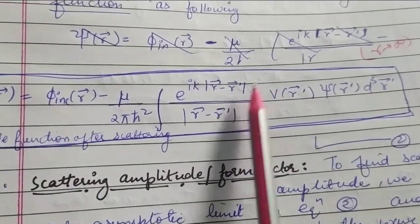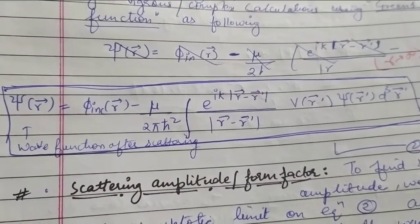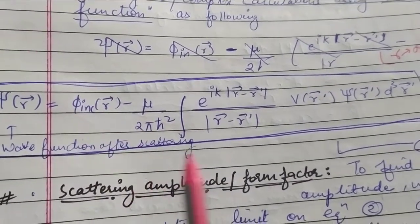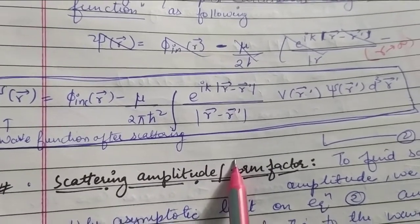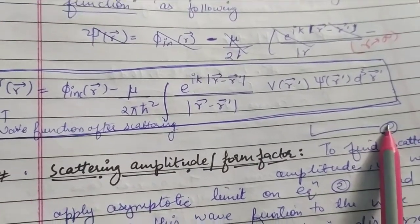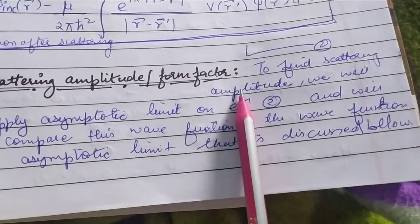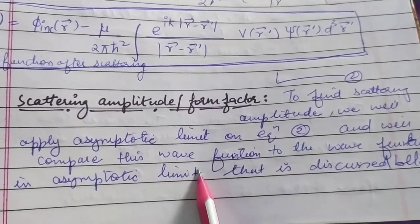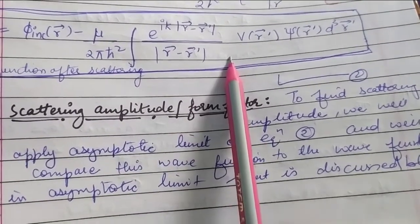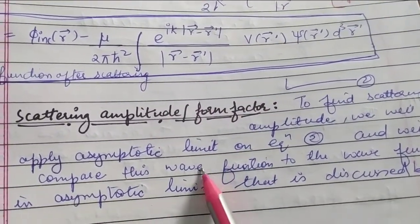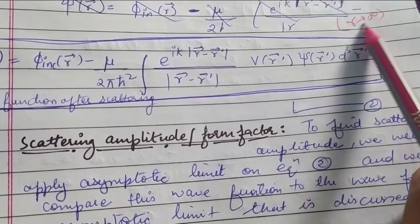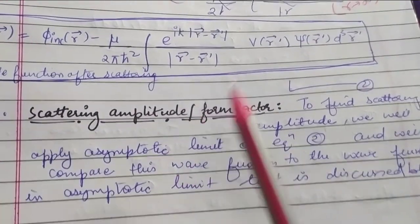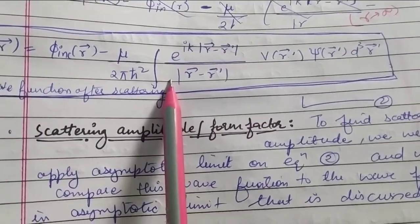After obtaining the wave function, the next task is to find the scattering amplitude (or form factor) f(θ, φ). To do this, we compare this wave function to the wave function in the asymptotic limit. The asymptotic limit is where we let r → ∞ — we consider the distance to be very large. We write the wave function in that limit and compare it with equation number two.